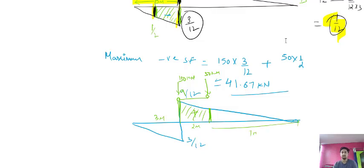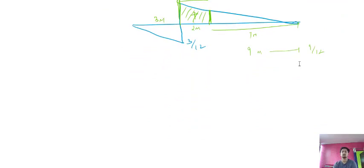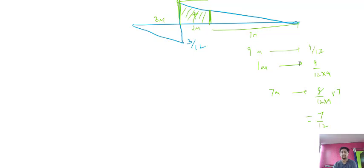The ordinate has no units for an ILD. For 9 meters it goes 9/12 upward, so for 1 meter it is 9/(12×9) = 1/12. For 7 meters it will be (9/12) × (7/9) = 7/12. So the ordinate at the 50 kN load position is 7/12.